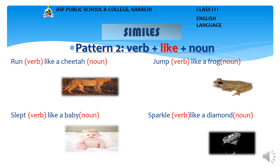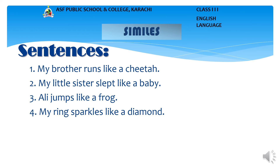Example No. 3: Jumps like a frog. In this phrase, jump is a verb and frog is a noun. This simile uses the word 'like' and compares jump and frog. Example No. 4: Sparkles like a diamond. In this phrase, sparkle is a verb and diamond is a noun. This simile uses the word 'like' and compares sparkle and diamond. Sentences: No. 1: My brother runs like a cheetah. No. 2: My little sister slept like a baby. No. 3: Ali jumps like a frog. No. 4: My ring sparkles like a diamond.